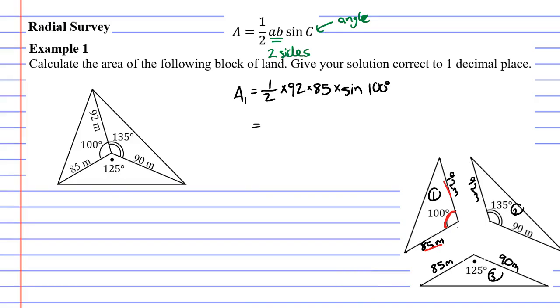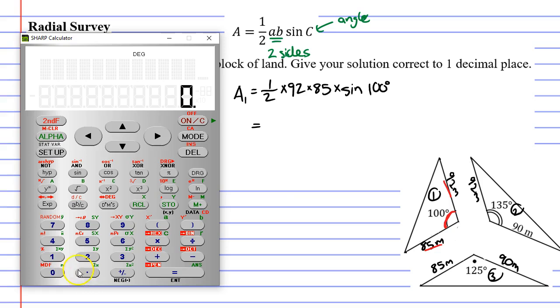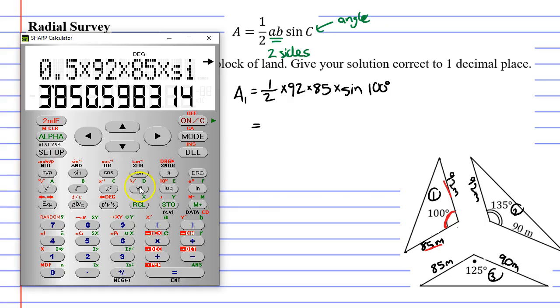So we can work this out bringing up our calculator. We've got half. Now I cheat. I write half as 0.5 times this by 92 times this by 85 and times this by sine of 100. Making sure it says degrees at the top.